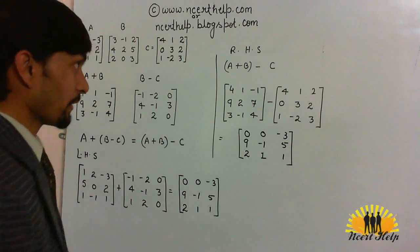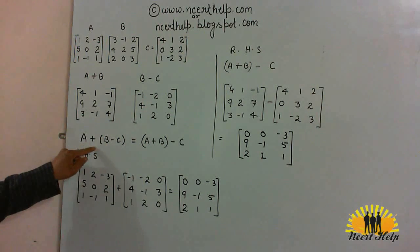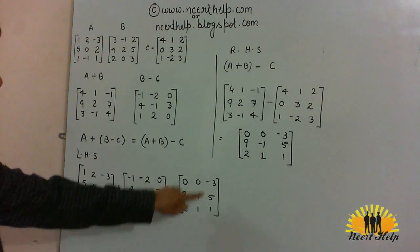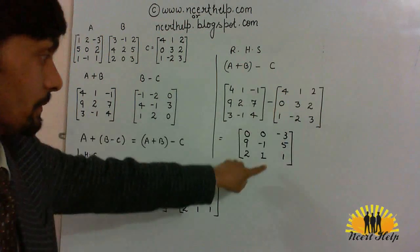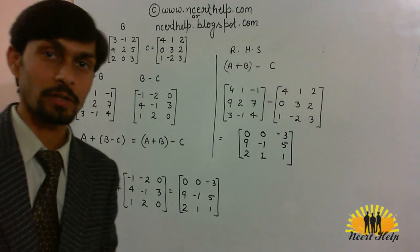So, it is verified that A plus B minus C and A plus B minus C both are equal. Hence, it is verified.